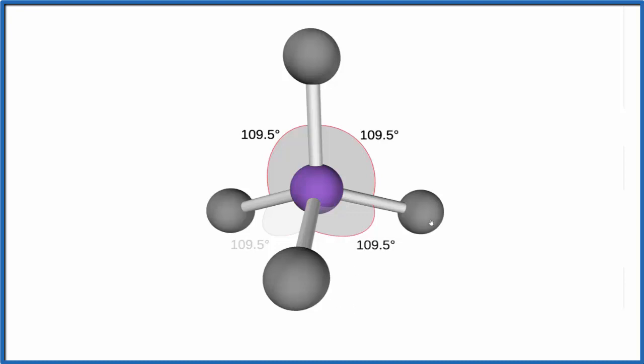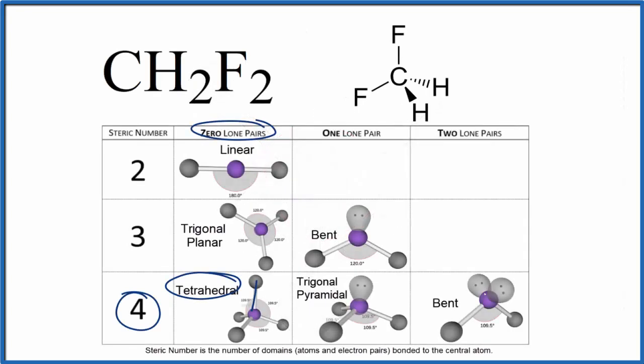Let's go back to our Lewis structure. We could also use the AXE notation to figure out the molecular geometry for CH2F2. A is the central atom, the carbon. X is the number of atoms attached - one, two, three, four.